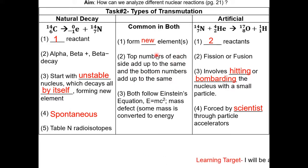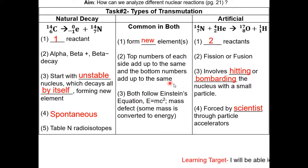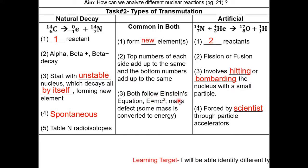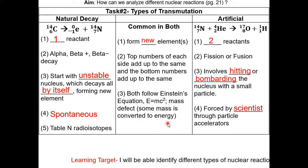Both natural and artificial transmutation will follow Einstein's equation, E equals mc squared, and there will be mass defect, which means some of the mass will be converted to energy during the nuclear reaction.